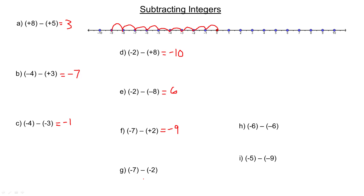For example G, we start again at negative 7, but now we're subtracting negative 2. Instead of going left like we would for subtracting positive 2, we're subtracting the opposite, so we go 2 to the right and end up at negative 5.